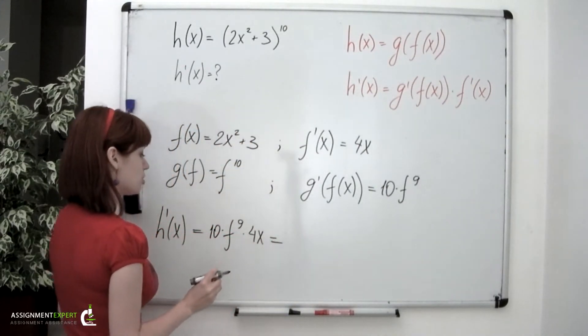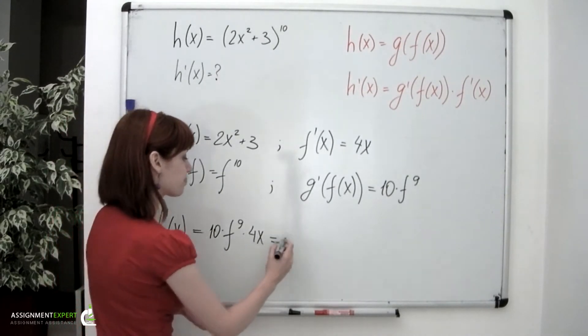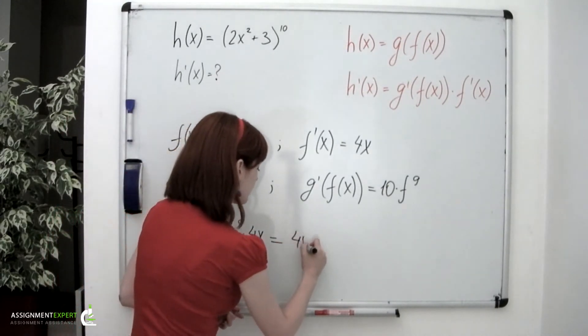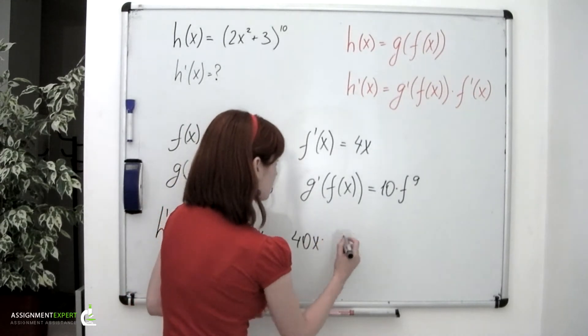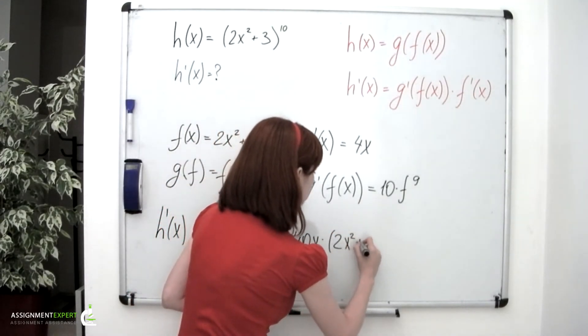And we'll substitute an expression for the f function and multiply 10 to 4. So we have 40x times 2x squared plus 3.